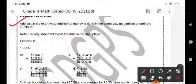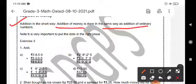Addition in the short way. Addition of money is done in the same way as addition of ordinary numbers you have done already before. It's very important to put the dots in the right place for adding the money when you are having paisa and rupees.